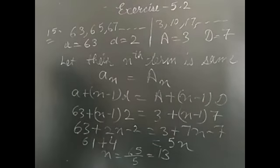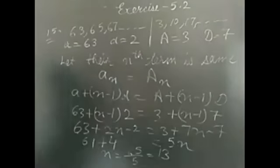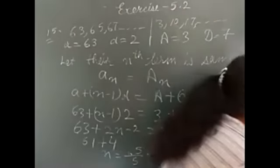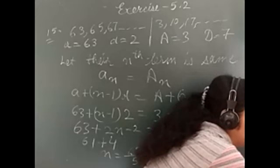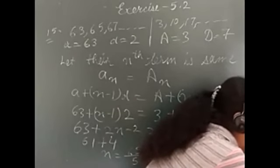So, their 13th term of both the APs is same. For what value of n? If the question has only asked for n's value, then you don't need to find out a_n. So, we have done just three questions of the exercise. Rest, please try to do yourself. And in the next class, we will finish this exercise first. And then, I will take your queries. Yes, I am coming to you.